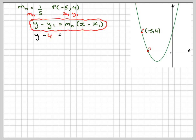So we get y minus 4 equals the gradient 1 fifth, x minus minus 5. Be careful when you substitute in. We're going to get y minus 4 equals 1 fifth of x. This becomes plus 5 times 1 fifth, which becomes plus 1.